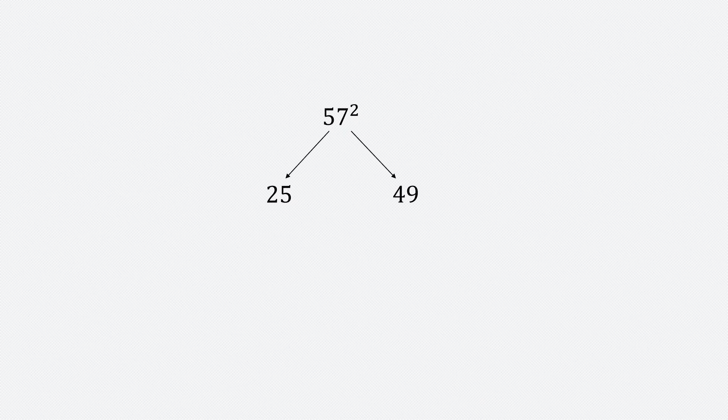The next is 57 squared. Once again, you take 7 squared — that's 49. You square 5 — that's 25. Now, add 7 to 25. The last two digits will be 49. The first two will be 25 plus 7, which is 32. So, 57 squared is 3249. You can confirm this with the calculator — it's indeed 3249.